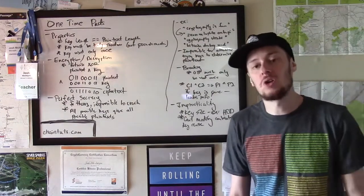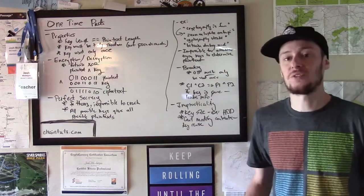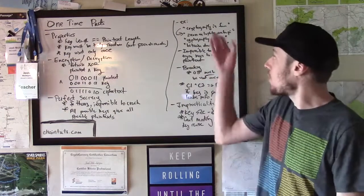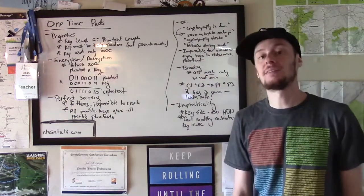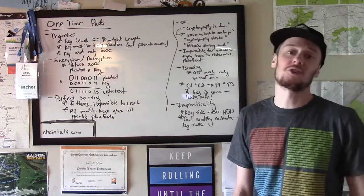So the one-time pad is also rather impractical. And one of the reasons for that is simply the keys become very unwieldy very quickly. If we only want to encrypt a 19-byte character stream, we only need a 19-byte key. And that's a very small amount of data.